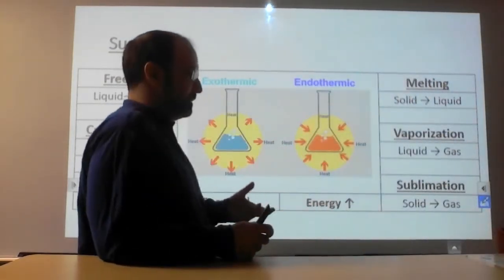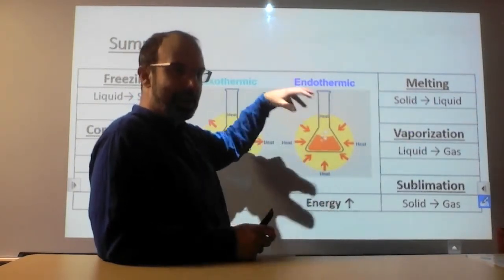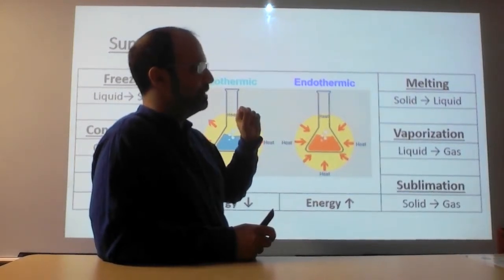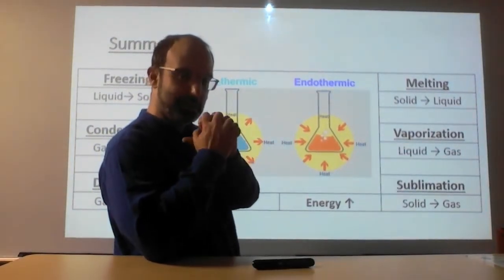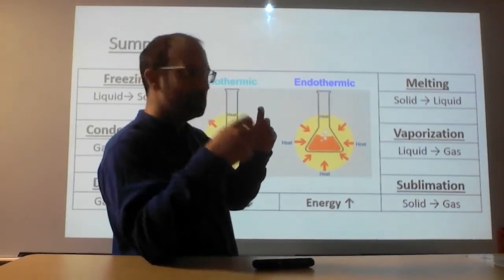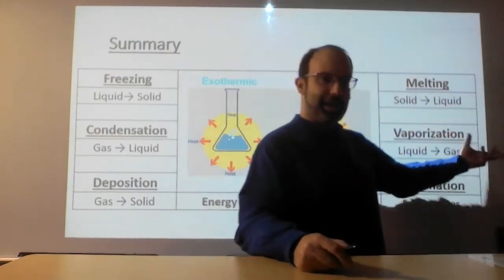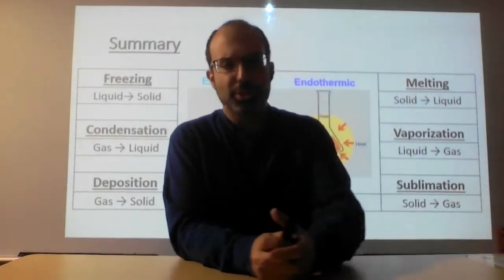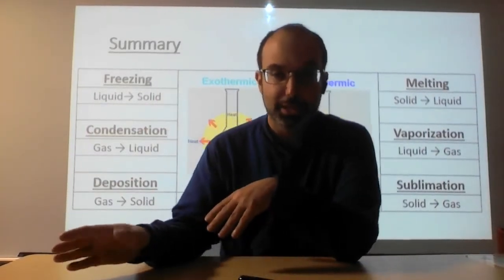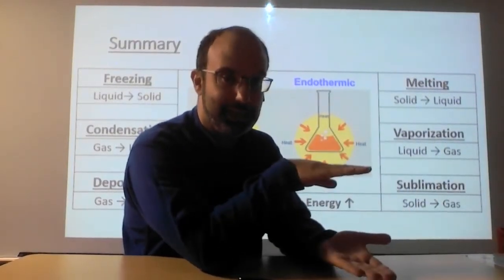Over here we have the opposite. Energy is being added in this endothermic process — energy is pouring in. As the energy level increases, the particles have the ability to move faster. If they were hooked together because of the intermolecular forces, they end up pulling themselves apart. So this is where solids melt or liquids turn into gas — they vaporize. We've got one set of transitions that involve losing energy and one set that involves gaining energy.